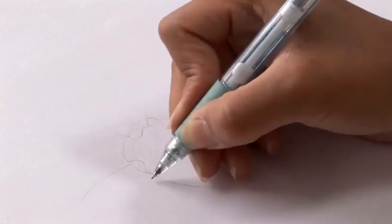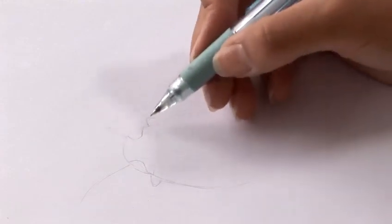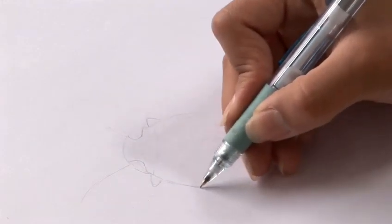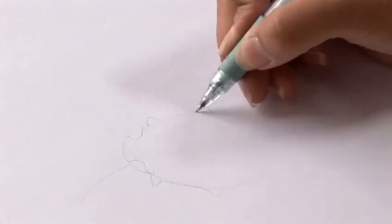And then mark out where you want to put their legs. So I'm going to just draw them very closely to their head, and then in the middle. Just drawing the base of the legs.